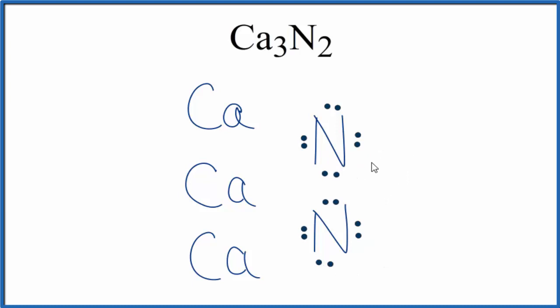Since each nitrogen gained three electrons, electrons are negative, we're going to put a three minus charge as the ionic charge on the nitrogen. Each calcium lost two. Since it lost electrons, electrons are negative, two plus ionic charge on each of these calcium atoms.